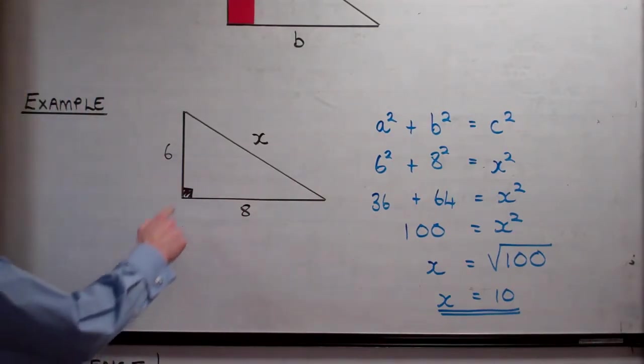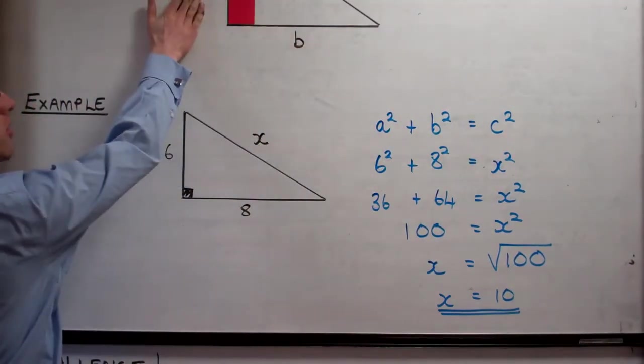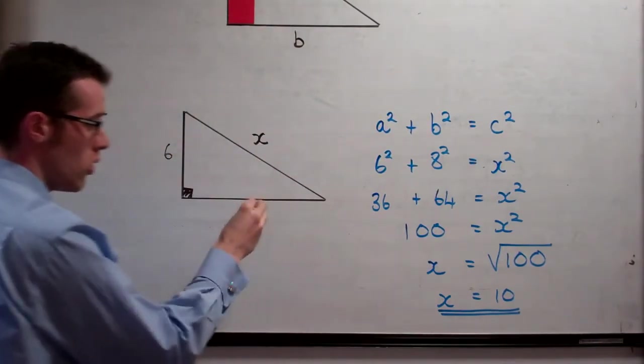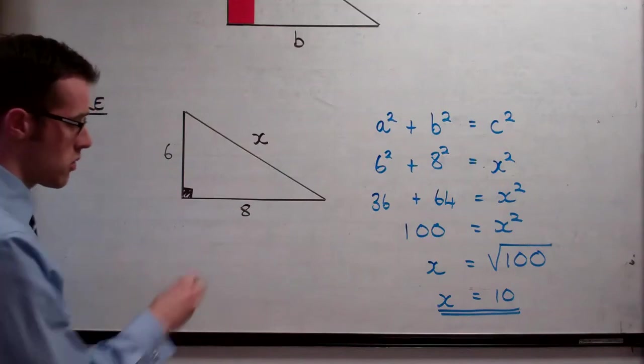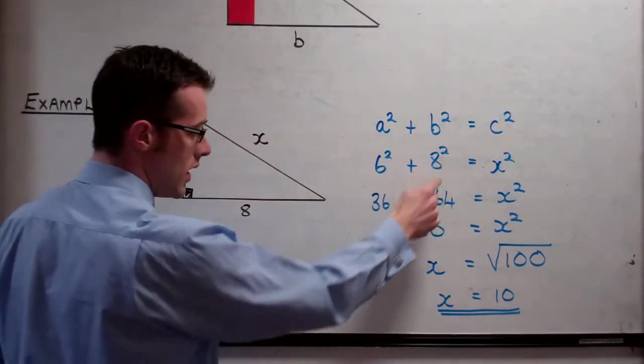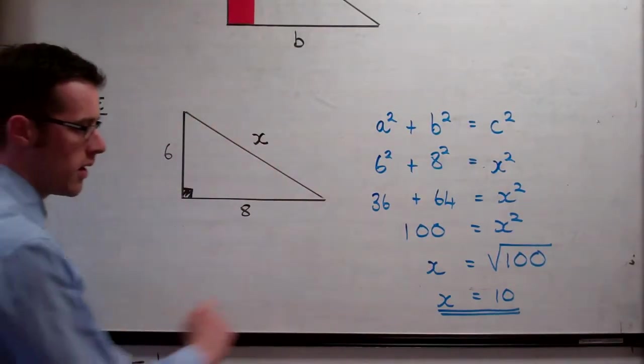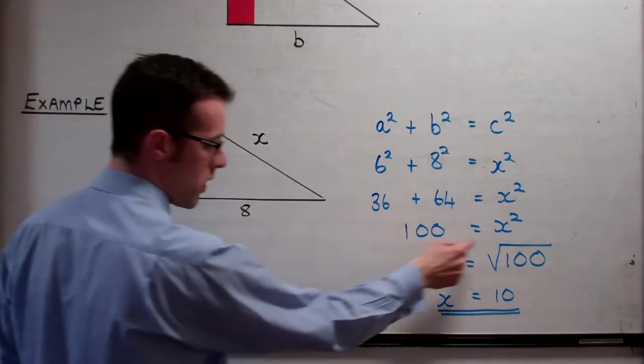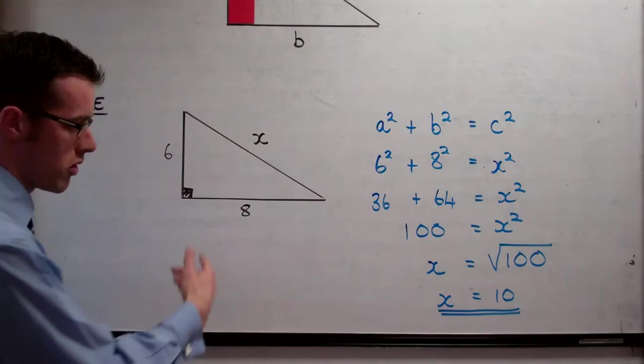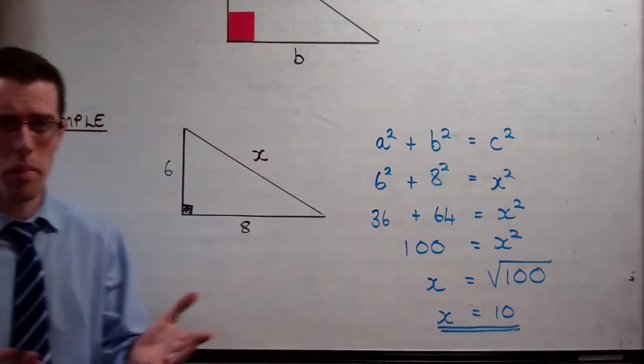So just to go through it again, what we've done is we've used this idea here, that these two sides, if we square them, are equal to this side squared. And we've applied that to a triangle with numbers on it. So we've done 6 squared plus 8 squared, you can see here, gives us 100. And that must equal this side, which is called x squared. So we can then work out that x squared is 100. What squared is 100? 10 times 10 gives us 100. So that means that x must be 10. And that's it. It's as simple as that.